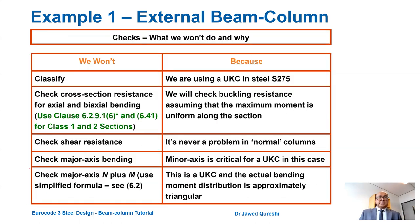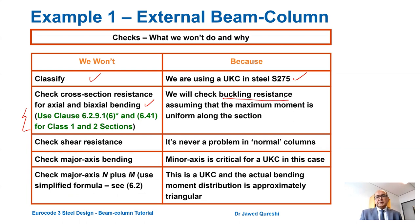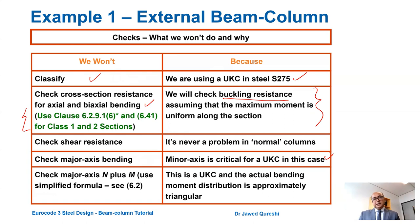We will not perform certain checks. We will not classify the section because this is a UKC and steel grade S275, so it will be class 1 or 2 section. We will not check cross-sectional resistance for axial and biaxial bending because here buckling resistance will dominate. We will not check shear resistance, major axis bending, or major axis N plus M. We will simply use the simplified formula 6.2, because the bending moment distribution is going to be triangular.